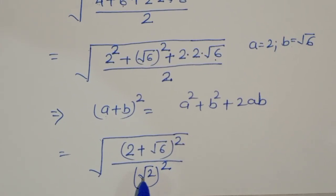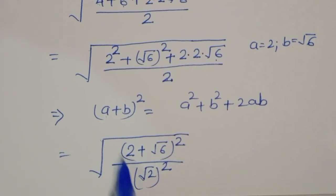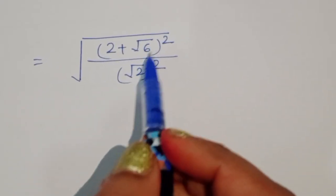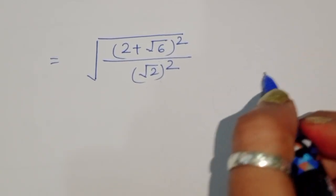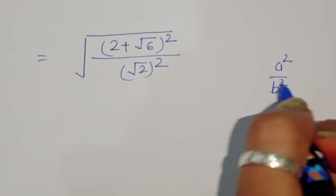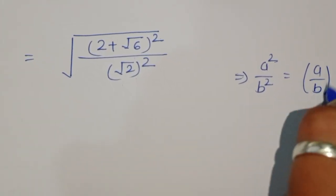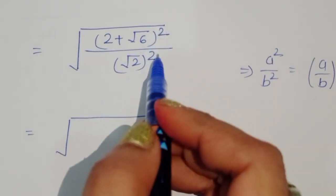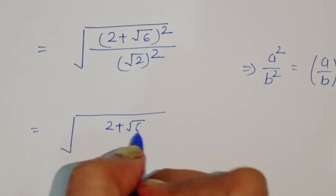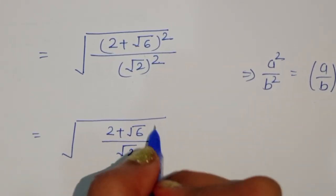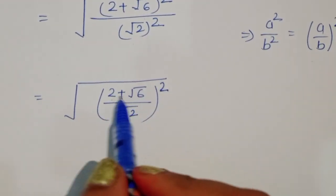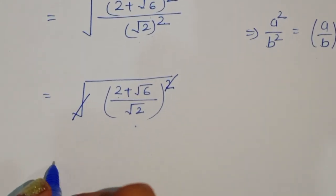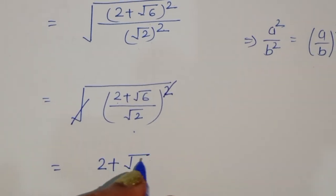Now we have 2 plus square root of 6 whole square, divided by square root of 2 whole square. We know the formula that a squared upon b squared equals a upon b whole squared. Using this formula, since both numerator and denominator are squares, we can write this as 2 plus square root of 6 divided by square root of 2, whole squared. The outer square and square root cancel, giving us 2 plus square root of 6 divided by square root of 2.